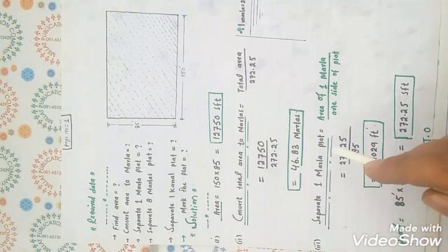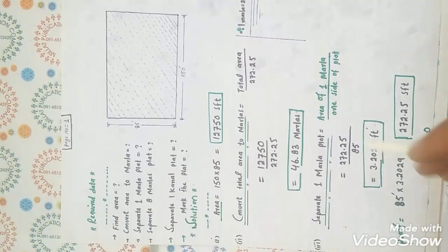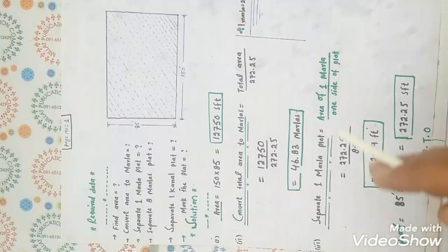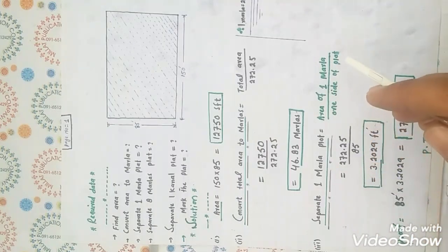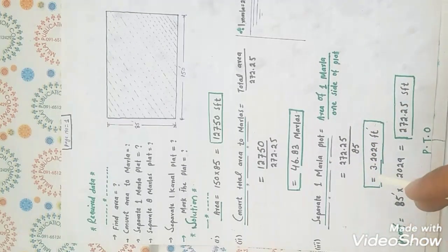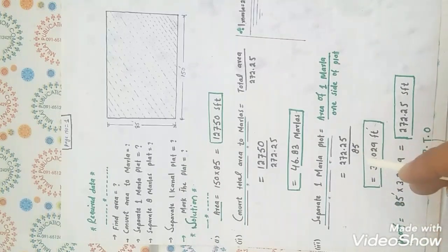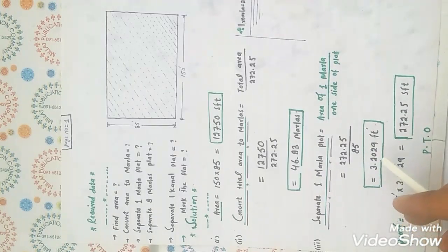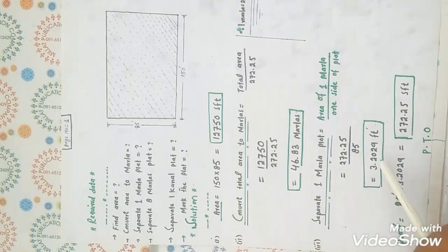The next condition is how to separate one Marla plot. The formula is: area of one Marla divided by one side of the flat. One Marla area equals 272.25 divided by 85, which equals 3.2029 feet. I will discuss what 3.2029 feet means at the end of the video. This value serves as proof for one Marla.